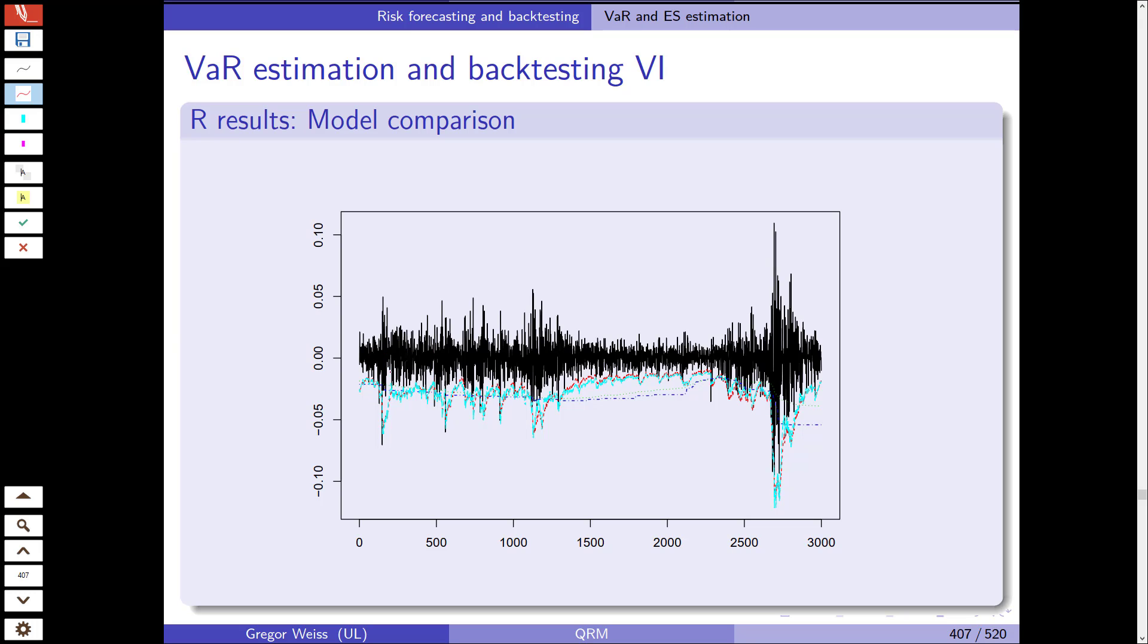Black is the actual log returns, and we have in red, turquoise, green, and blue, those different lines of the risk forecast. And as you can see, I'm pretty sure the blue line is the exponential weighted moving average. This is not rather conservative, and the turquoise and red lines, they are much closer to the actual losses. The question now is if we have too many exceedances, so we have to backtest these. Now you can see there are some losses that exceed our var forecasts.